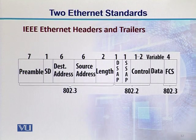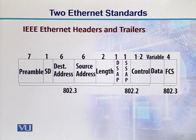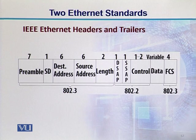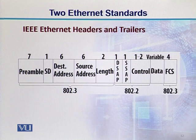Then we have some 802.2-compatible fields: 1 byte is assigned to DSAP and the second byte is assigned to SSAP. Then 1 to 2 bytes are meant for control. After that comes your data field, whose size is variable and can go up to 1500 bytes. Then there is the Frame Check Sequence (FCS) field, whose purpose is to detect errors. This field is 4 bytes and was introduced by 802.3.